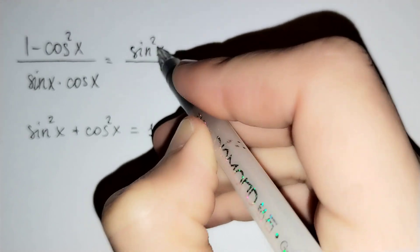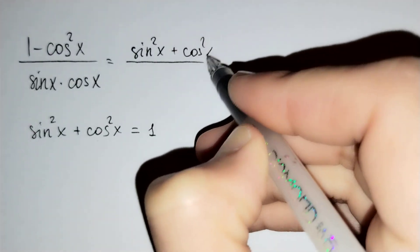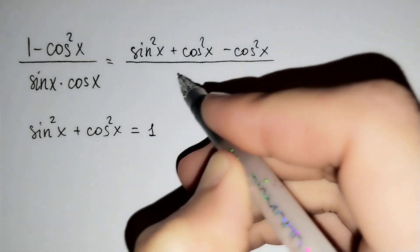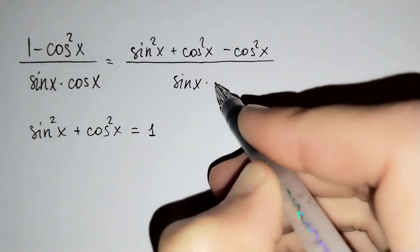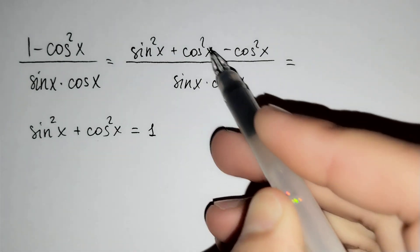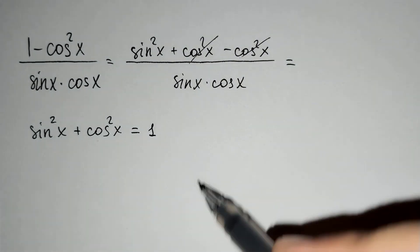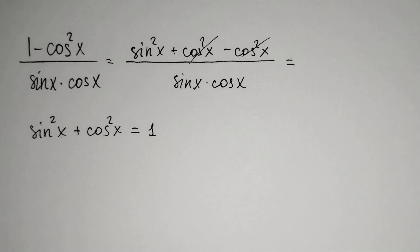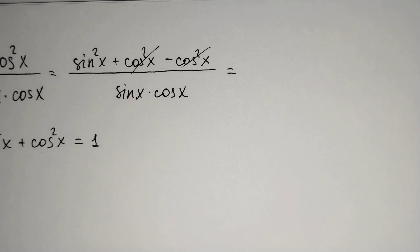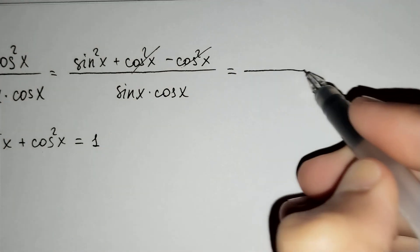Sine squared x plus cosine squared x minus cosine squared x over sine x times cosine x. And cosine squared x are the same, let's cancel it. And sine squared x over sine x times cosine x remain here.